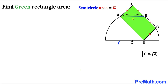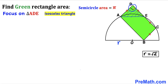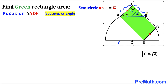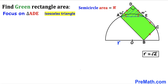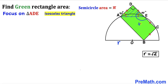Next, let's connect points A and E and focus on right triangle ADE. The angle ADE is 90 degrees since we are dealing with this green rectangle. Since side length AD equals side length DE, this triangle is isosceles, so both base angles are 45 degrees each. The sum of all three angles equals 180 degrees.